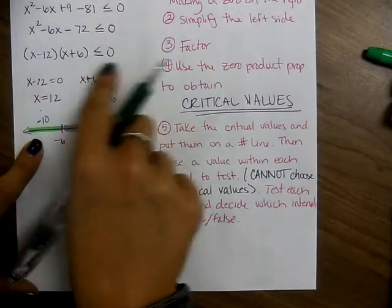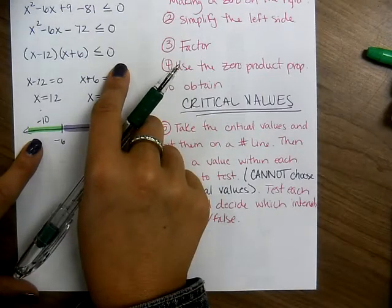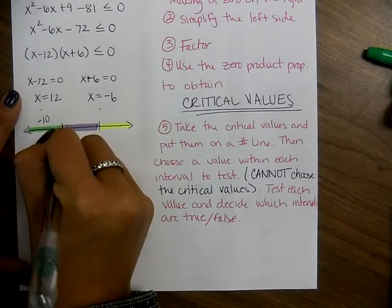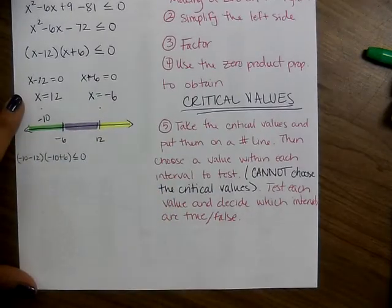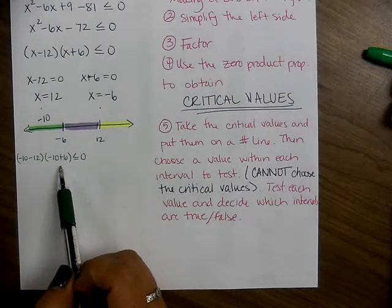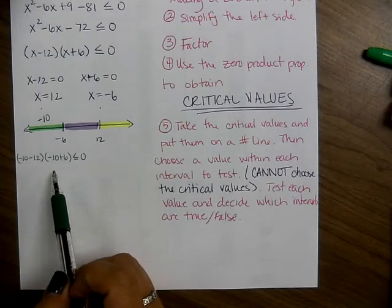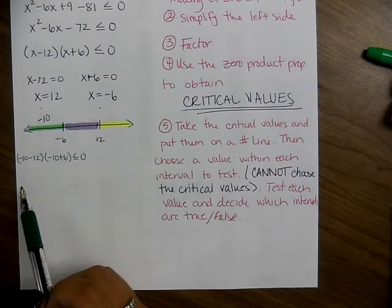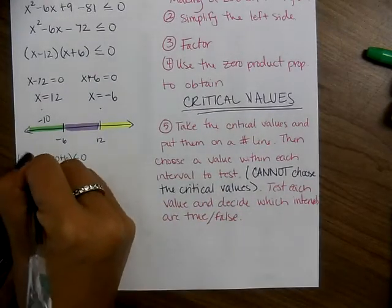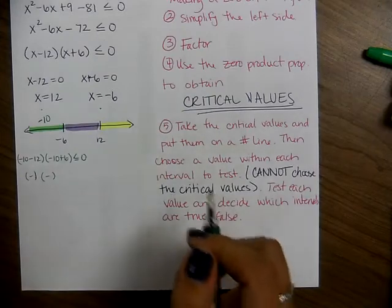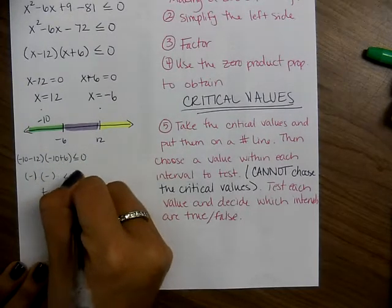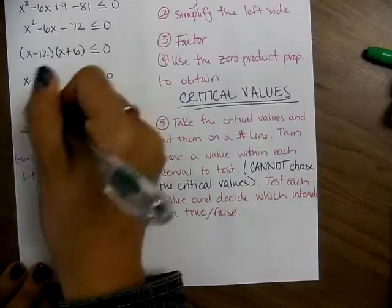Go back to the factored piece: plug in negative 10. You get negative 10 minus 12 times negative 10 plus 6, and check if that's less than or equal to 0. Don't worry about the actual numbers — think about the signs. This is negative times negative, which is positive. Is a positive less than or equal to 0? No. So that interval is false — all numbers in that green interval produce a false solution.